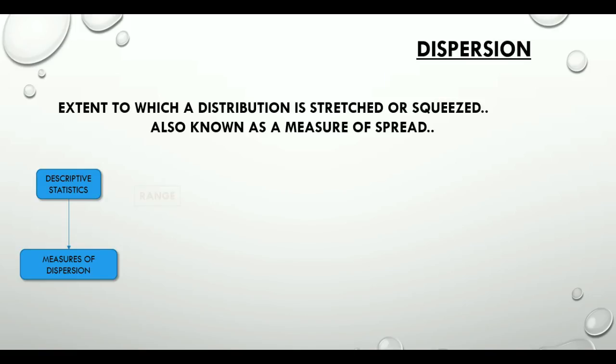The first measure of dispersion would be range, the difference between the largest and the smallest value in a data set. So the range here would be the difference between 12 and 3, that is 9.